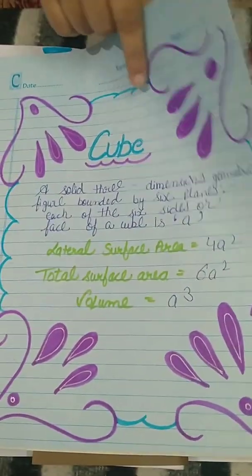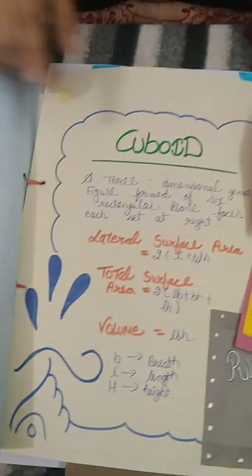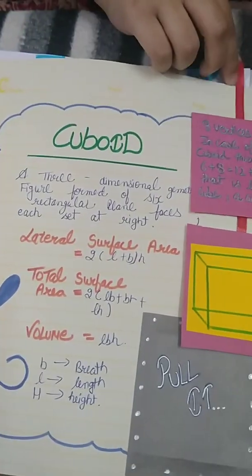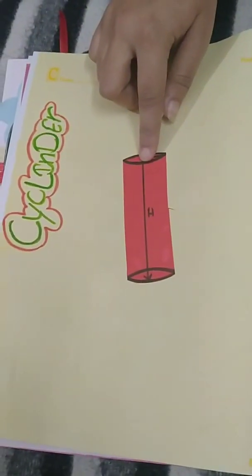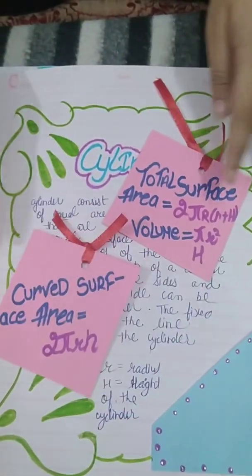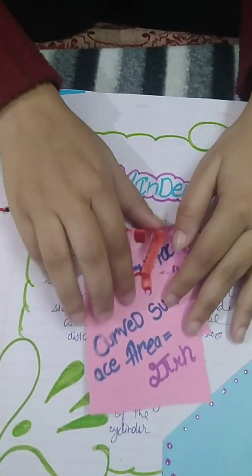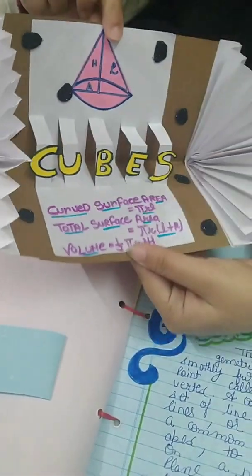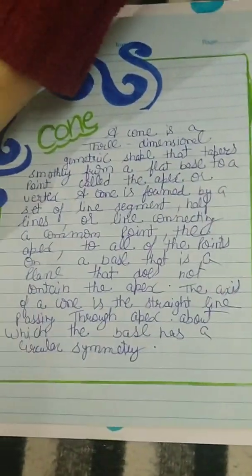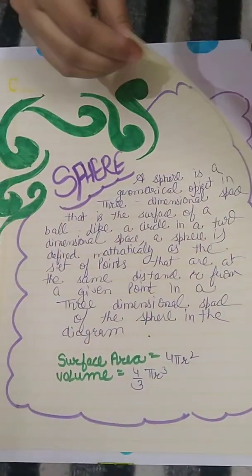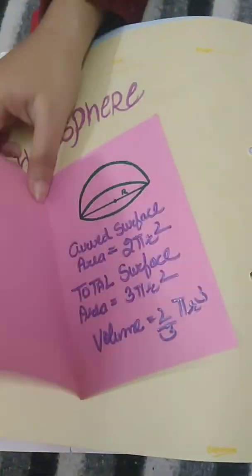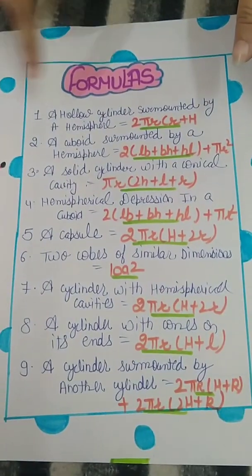Here is a picture of a cube, cuboid, and some introduction about cuboid. There is also paper folding for cylinder, cube, cone, sphere, hemisphere, and the formulas section.